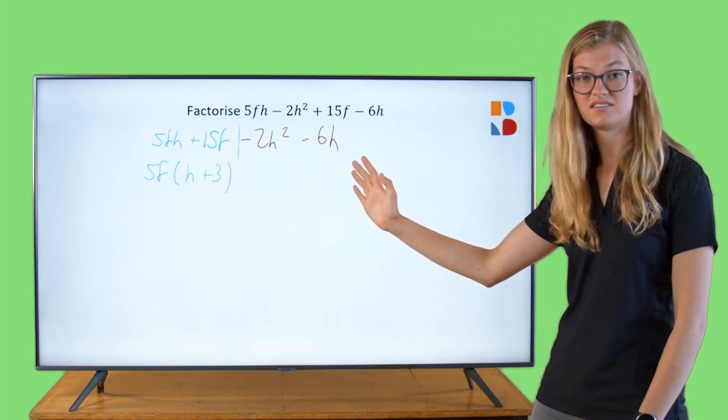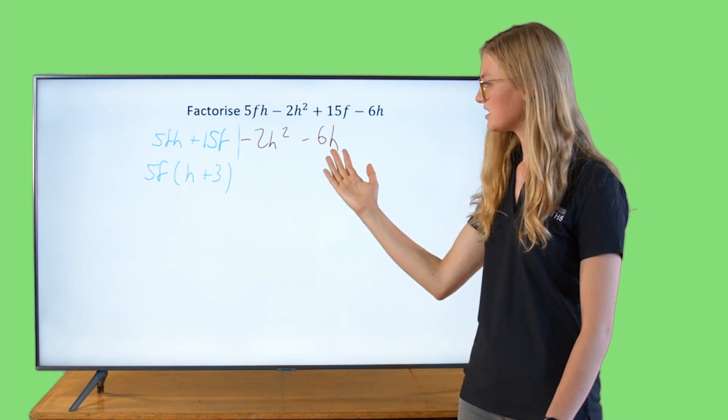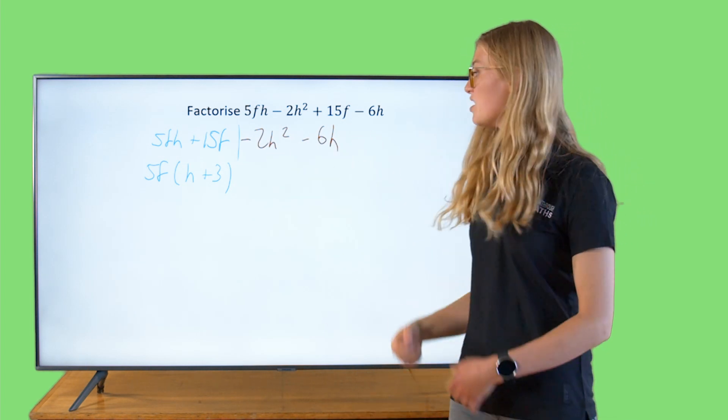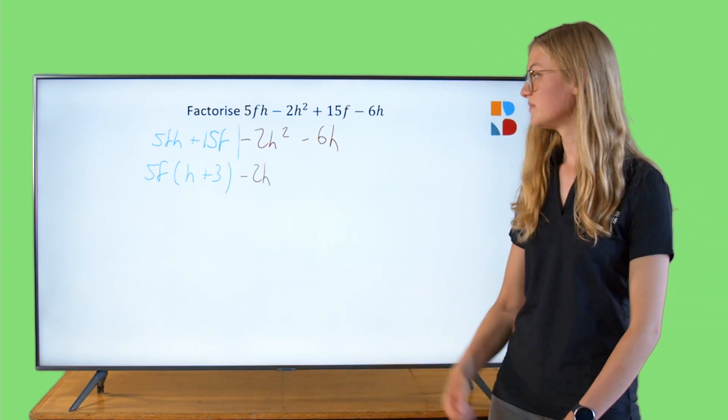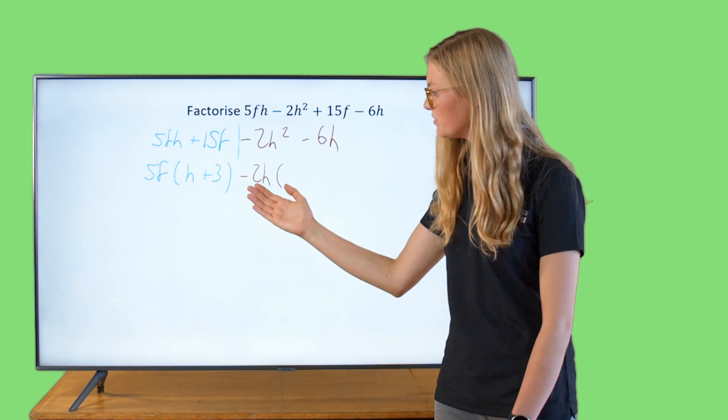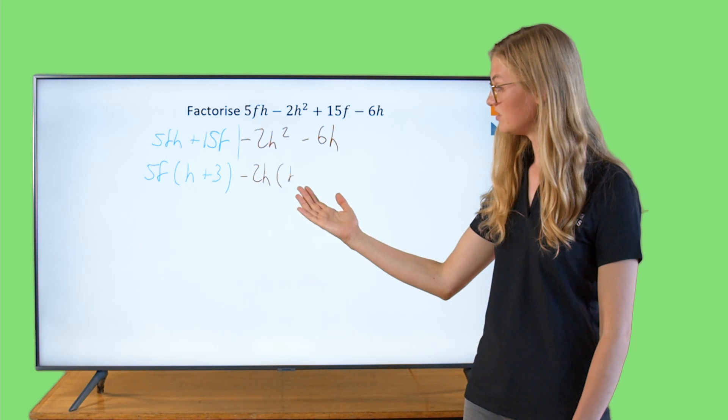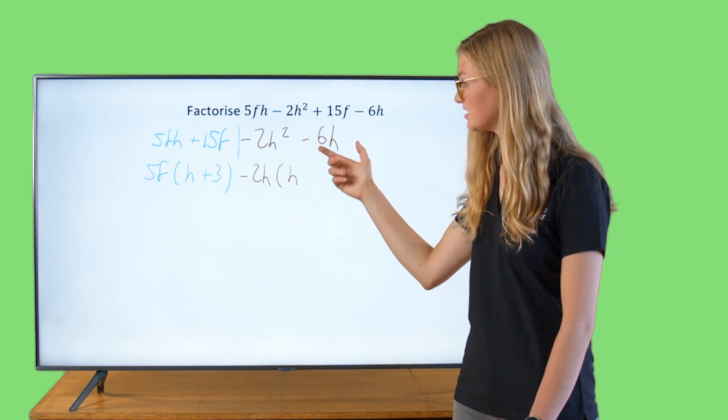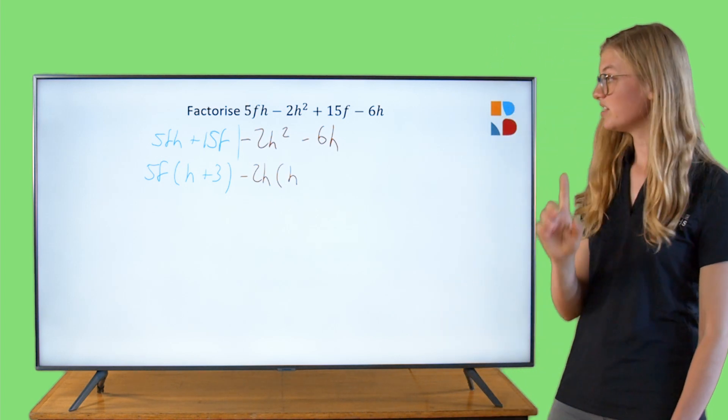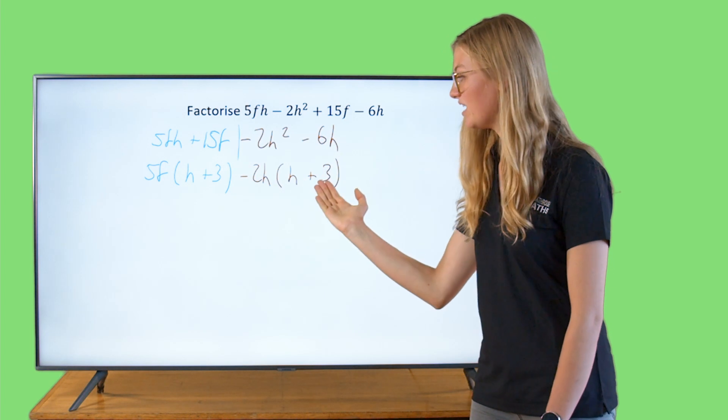Let's have a look at the next side. Minus 2H squared minus 6H. What's in common here? A minus 2H. If we take minus 2H out of minus 2H squared, what we've been left with is just a H. Minus 2H, if we take minus 2H out of minus 6H, we're gonna be left with plus 3. Remember, minus and the minus will be left with a plus. Really important to remember that one.